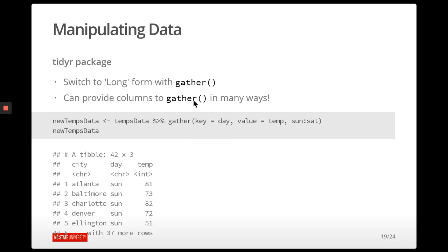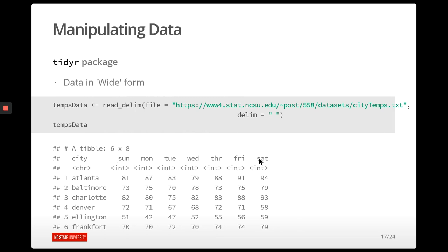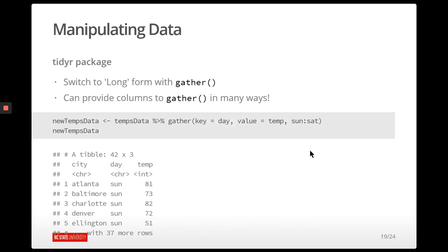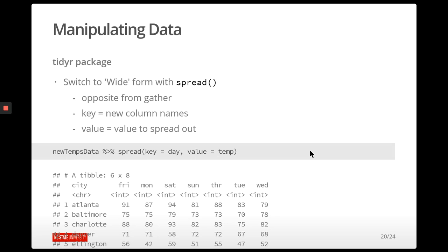We can also specify the columns for gather using select-style notation — for example, all columns between Sunday and Saturday. To go in the opposite direction from long back to wide, we use the spread function. We just specify the key and value in the opposite direction: the key is the new column name and the value is the value to spread out. Going from our long data set with day and temperature, day is our key and temperature is the value to spread. It does change the ordering of columns, but otherwise we get the exact same data set as before.